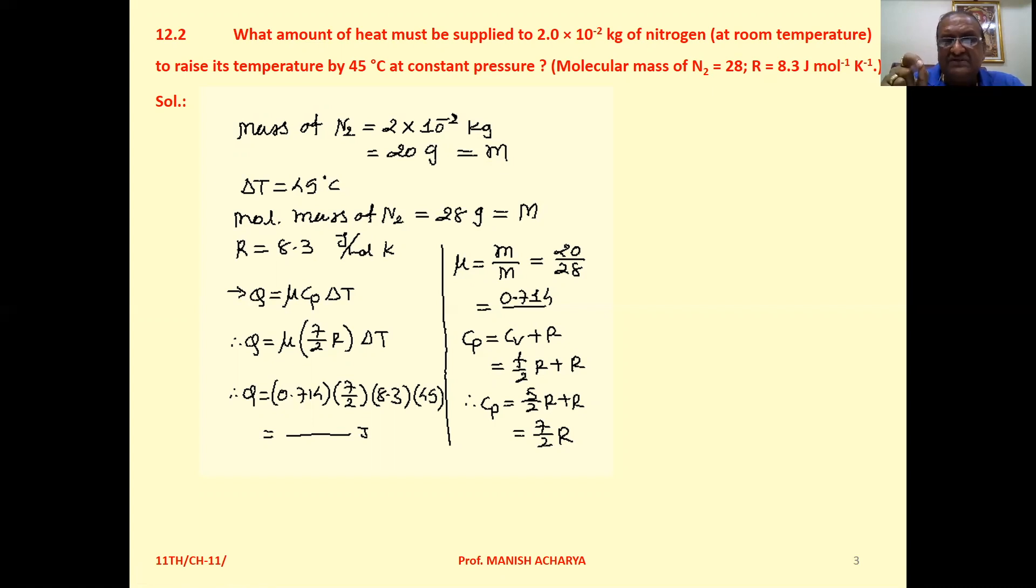We know the amount of heat required to change the temperature of m grams of substance by ΔT is Q = msΔT, where m is the mass of the substance, s is specific heat capacity, and ΔT is the temperature change. For a gas, we can write the equation as Q equals the number of moles.